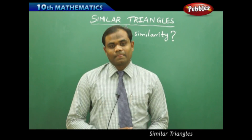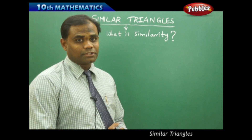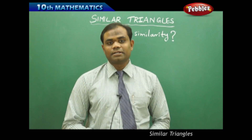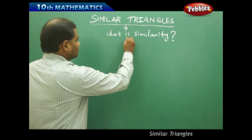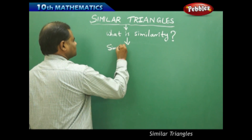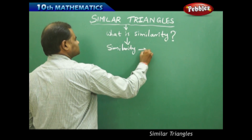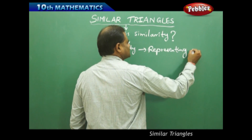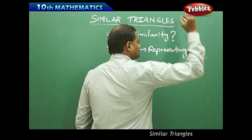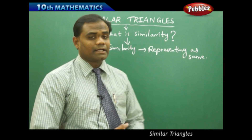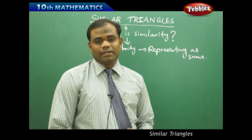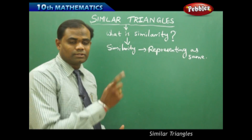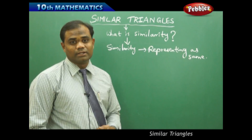So what is similarity? Similarity is something we see because the word similar means they are the same or representing the same. So if I take the general meaning of similarity, similarity is representing as same. In general sense we call similarity as representing as same, but in another form of understanding, similarity is where two different objects look similar but they are not equal in size.